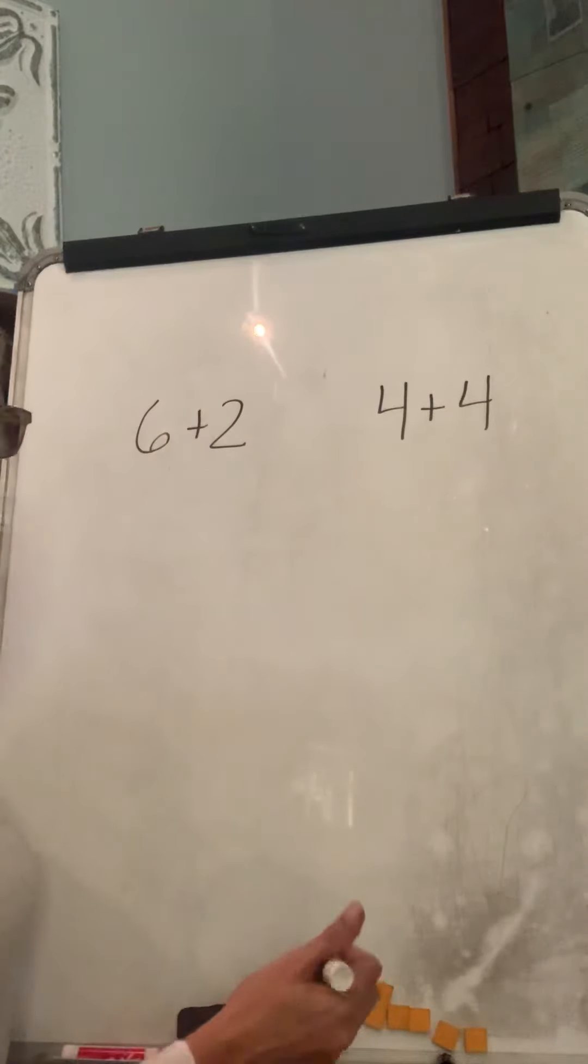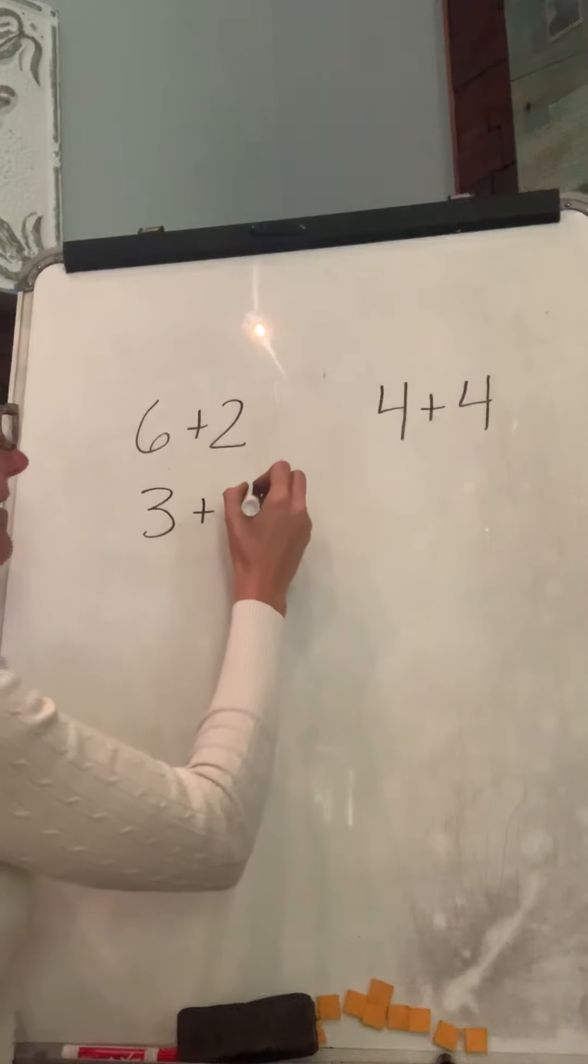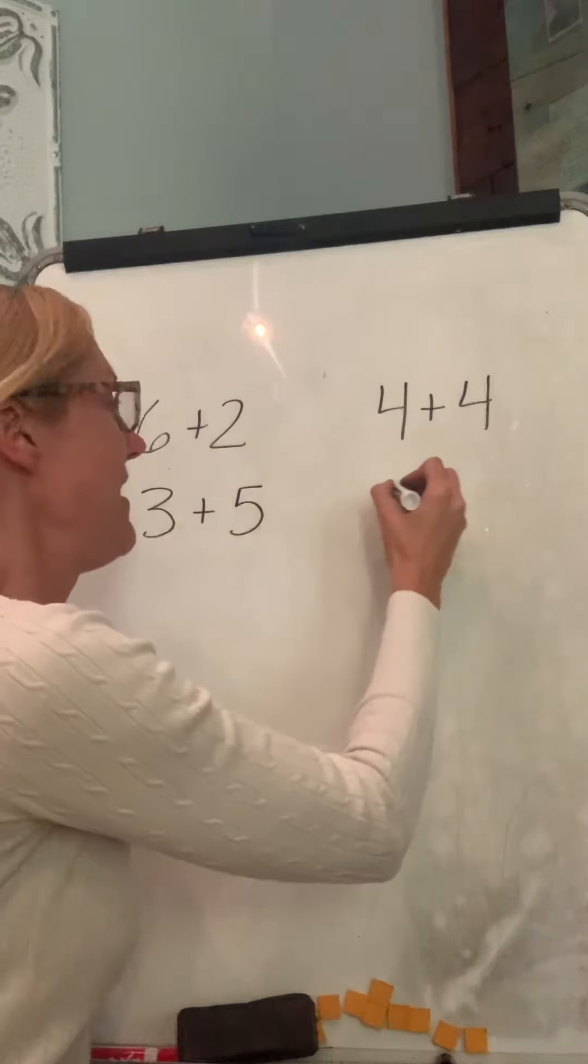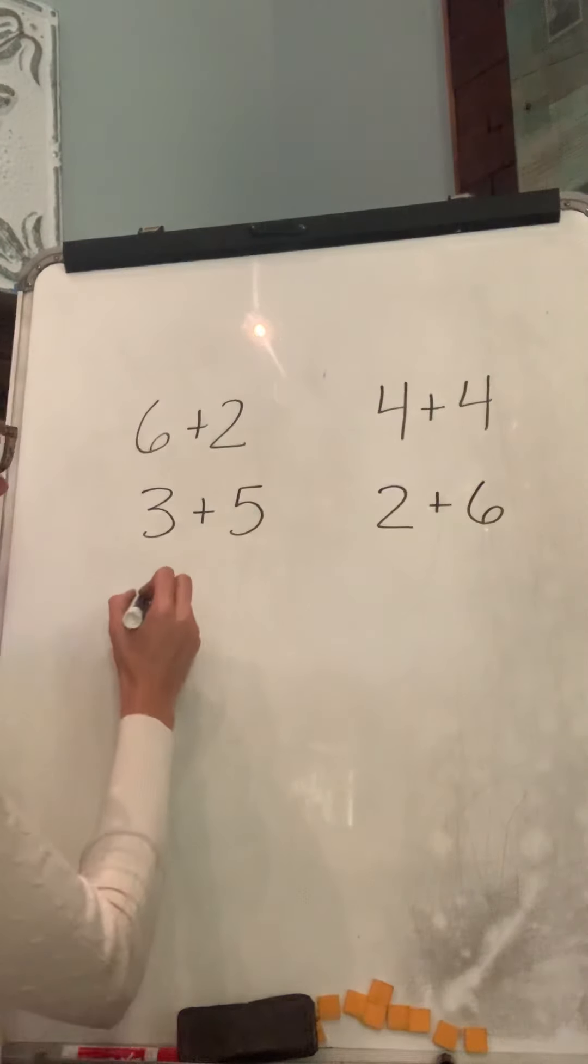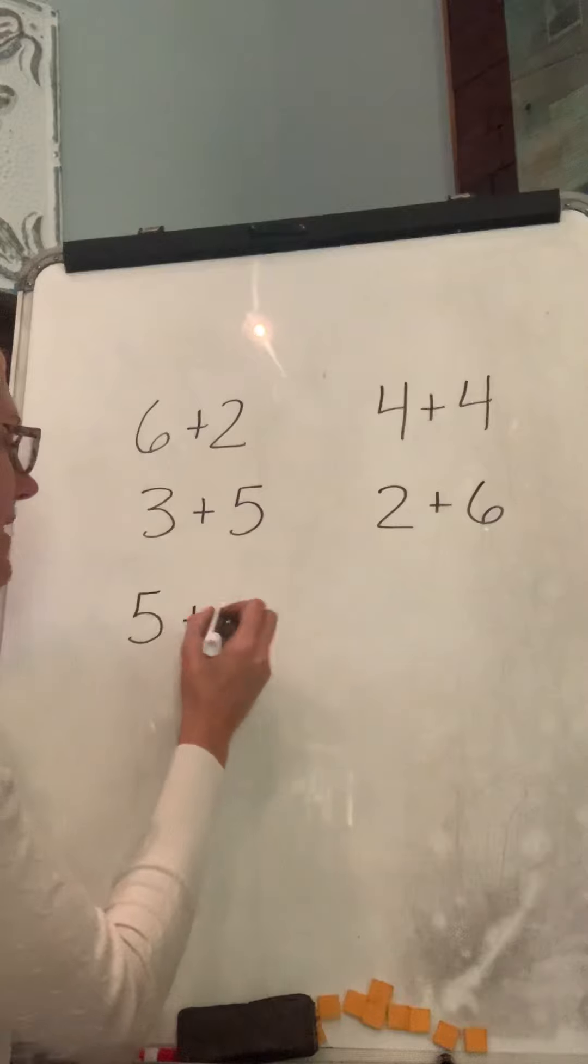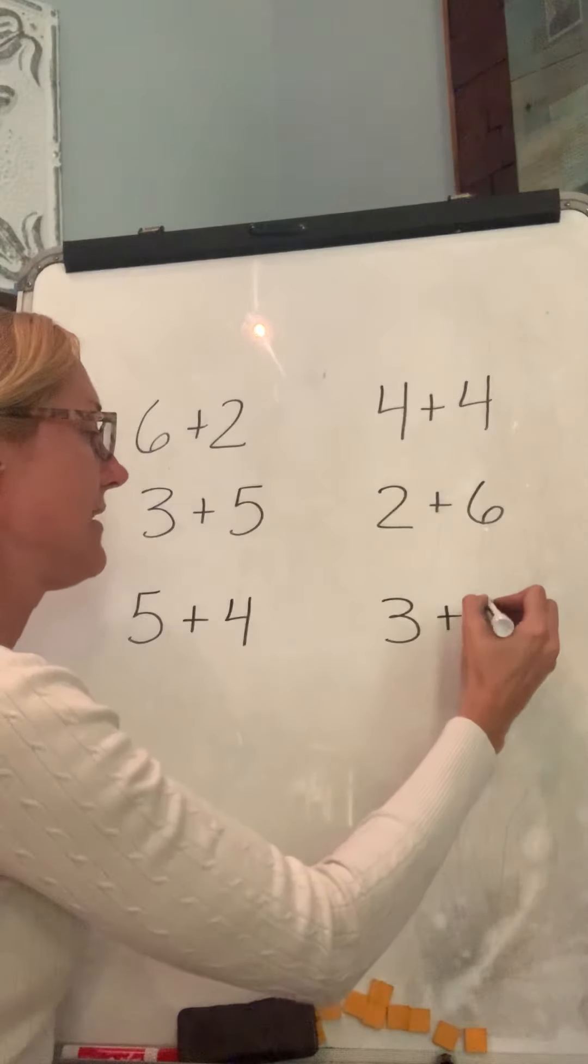Six plus two and four plus four. How about three plus five and two plus six? Five plus four and three plus two?